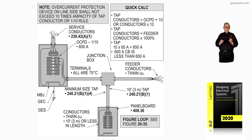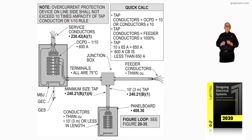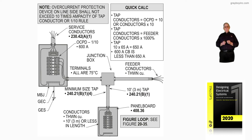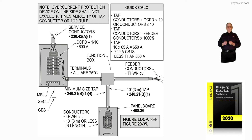Those are your tap sections. We are reviewing a tap with smaller conductors to a larger conductor, as you see in the illustration. The quick count gives you some good information. It's a tap, so for the conductors, you'd use the overcurrent device and divide it by 10 for a 10-foot tap. You would take the overcurrent device and divide it by one-third if it's over 10 to 25 feet.